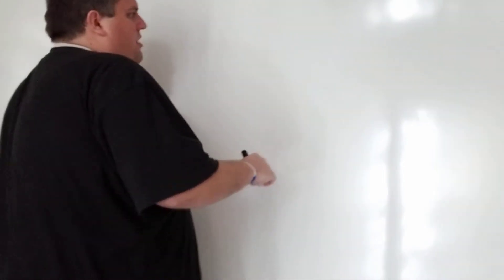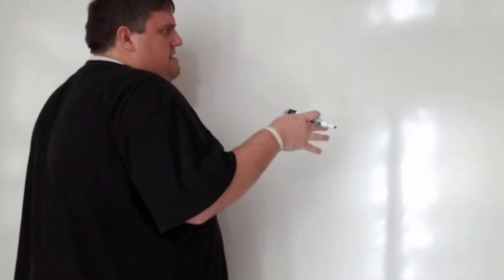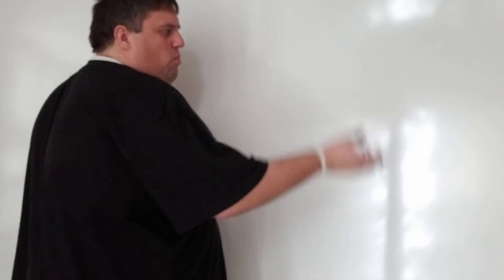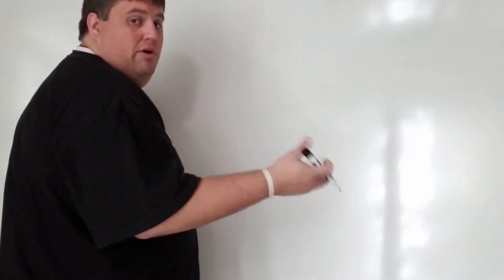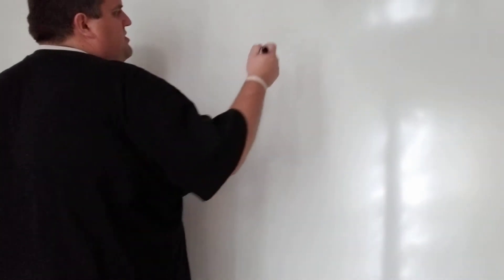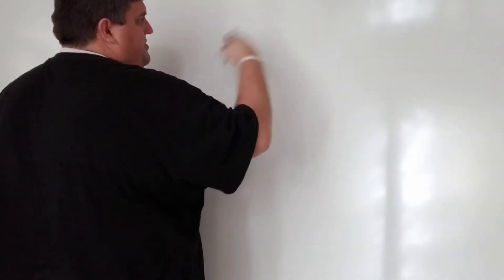So today we're going to talk about solving equations and we're going to do ones with variables on both sides. So far all of our variables have been on one side, either the left or the right side of the equation. But now we're going to talk about what's going to happen when we have variables on both sides.